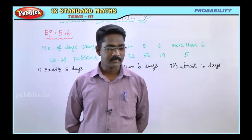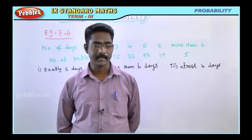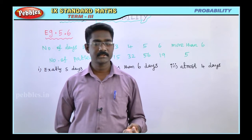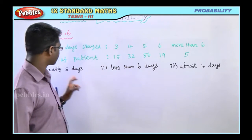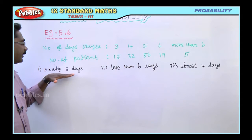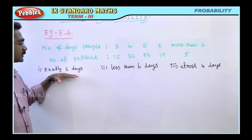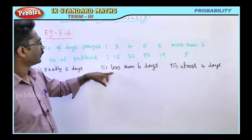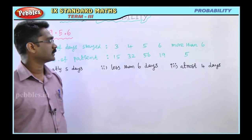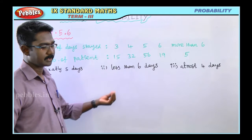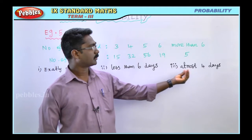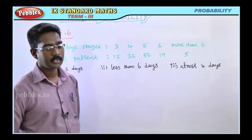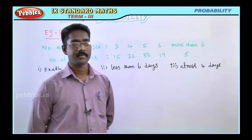If a patient was selected at random, find the probability that the patient stayed: first, exactly 5 days; second, less than 6 days; third, at most 4 days; and fourth, at least 5 days.